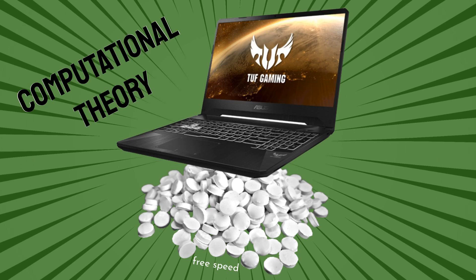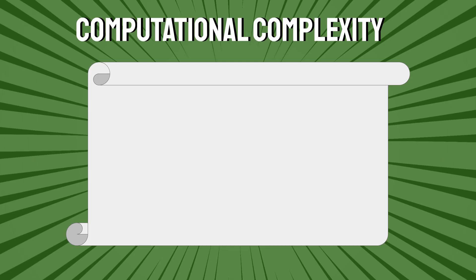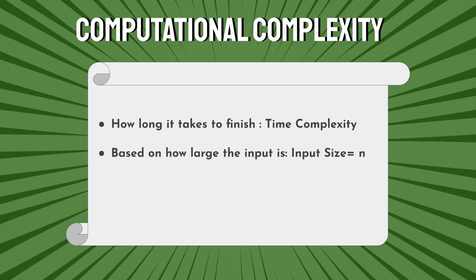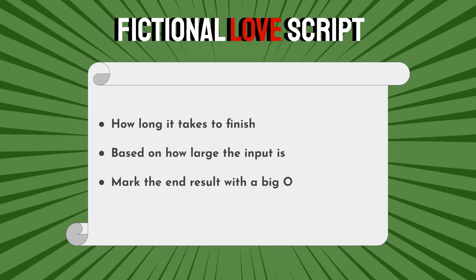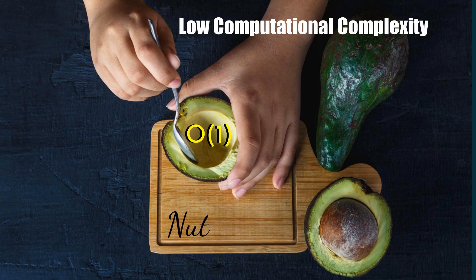Which, if you know us computer scientists, we're great at making things run faster. A big part of computational theory is finding the computational complexity of algorithms. Computational complexity is how long it takes something to finish — it's typically based on how large the input is, and you usually mark the end result with a big O. A high computational complexity is bad: things are complicated and it'll run slowly. While a low number means computational theorists are going to go nuts over it.